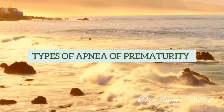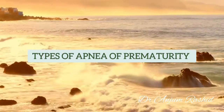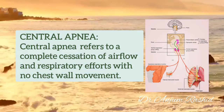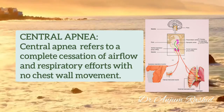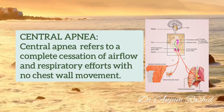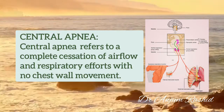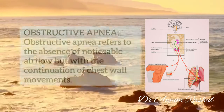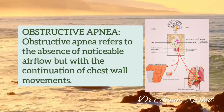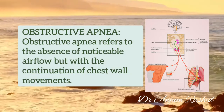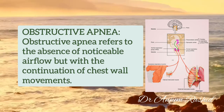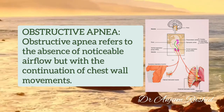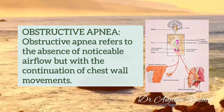There are different types of Apnea of Prematurity. One is Central Apnea, which refers to a complete cessation of airflow and respiratory effort with no chest wall movement. Next is Obstructive Apnea, which refers to the absence of noticeable airflow but with the continuation of chest wall movements.